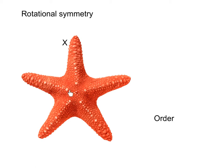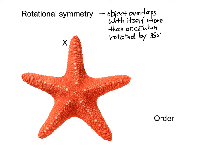Now let's look at the starfish. Besides reflectional symmetry, it also has rotational symmetry. The definition of rotational symmetry is that the object should overlap with itself more than one time when it is rotated by 360 degrees.